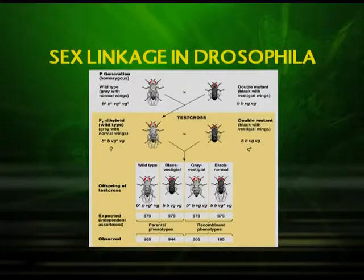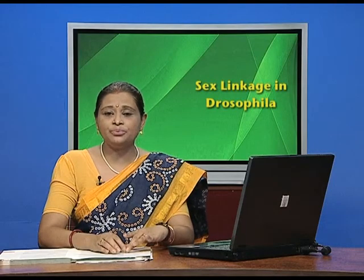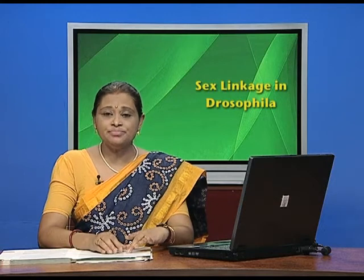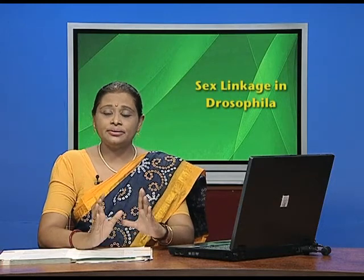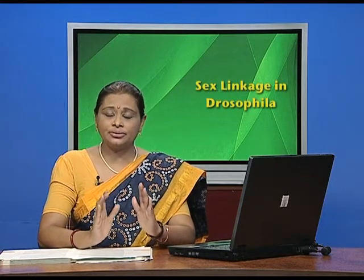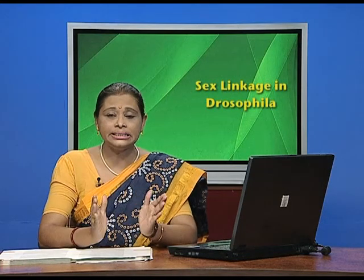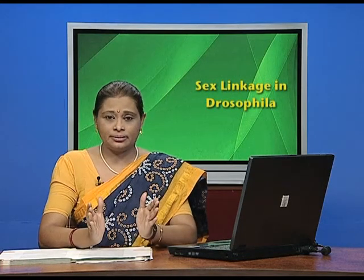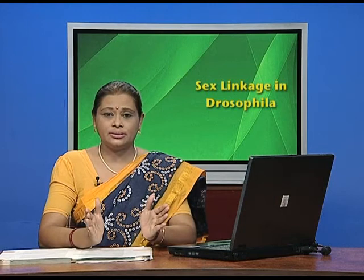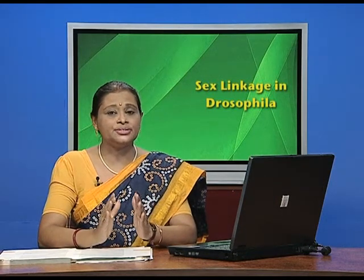He observed 965 and 944 of the parental types, and the recombinant phenotypes were 206 and 185. This can be explained by the fact that the genes located close together on the same chromosome were inherited together — they were not separated — and that is what linkage is.